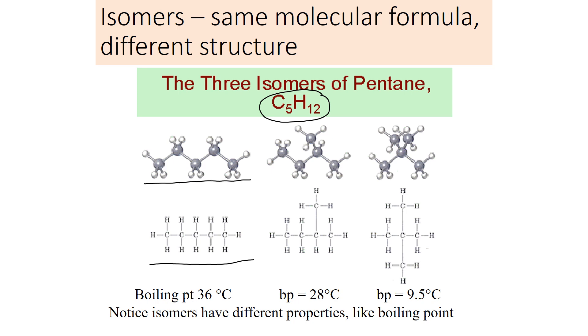Another arrangement: visualize taking one of the carbons off the end and making a branch. So we have four in a row with one as a branch. The third option is to take two off the end and make branches, so you have one carbon in the middle surrounded by other carbons.